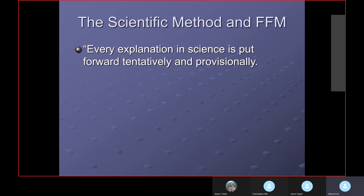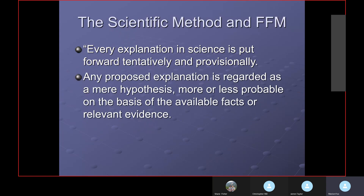When I was doing graduate work, I learned that if you did a doctoral dissertation and you found a probability of 90% or better, that was generally acceptable — your hypothesis was proven to a 90% probability. Any proposed explanation is regarded as a mere hypothesis. I would put it in simple terms as an educated guess — more or less probable on the basis of available facts or relevant evidence. The proposed explanation is tentative, provisional, and a hypothesis.